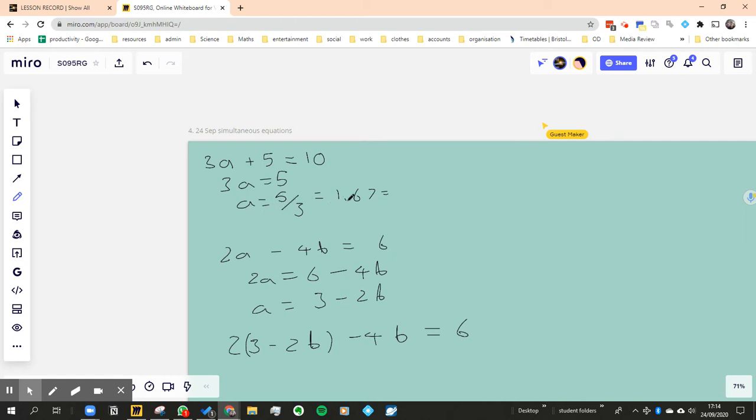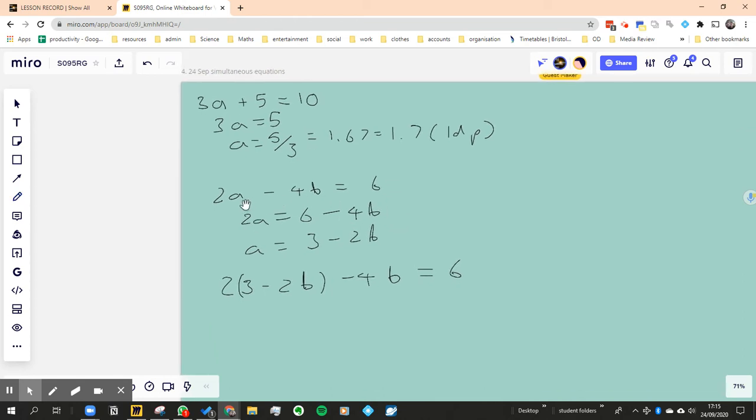Dividing by 3, you got a = 1.67. I put a little equal sign there so I can say that's 1.7 to one decimal place. Now the next problem - I basically laid you into a trap. You can't solve it.